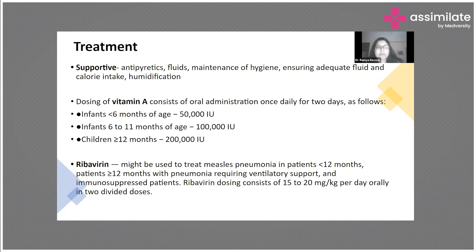If a child is already malnourished and gets measles, the malnutrition worsens significantly. So we have to maintain adequate fluid and calorie intake — that is very important. For the rash, a calamine lotion can be used, or even simple coconut oil can be applied to make the child comfortable. These are some of the supportive treatment measures.